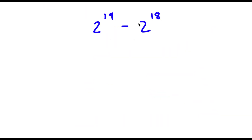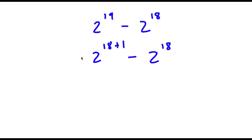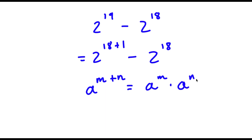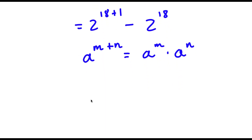So I have 2 to the power of 19 minus 2 to the power of 18. To solve this, I'm going to replace 19 with 18 plus 1, because 19 is the same thing as 18 plus 1. So now I have 2 to the power of 18 plus 1 minus 2 to the power of 18. Using the property a^(m+n) equals a^m times a^n, 2 to the power of 18 plus 1 equals 2 to the power of 18 times 2 to the power of 1, minus 2 to the power of 18.